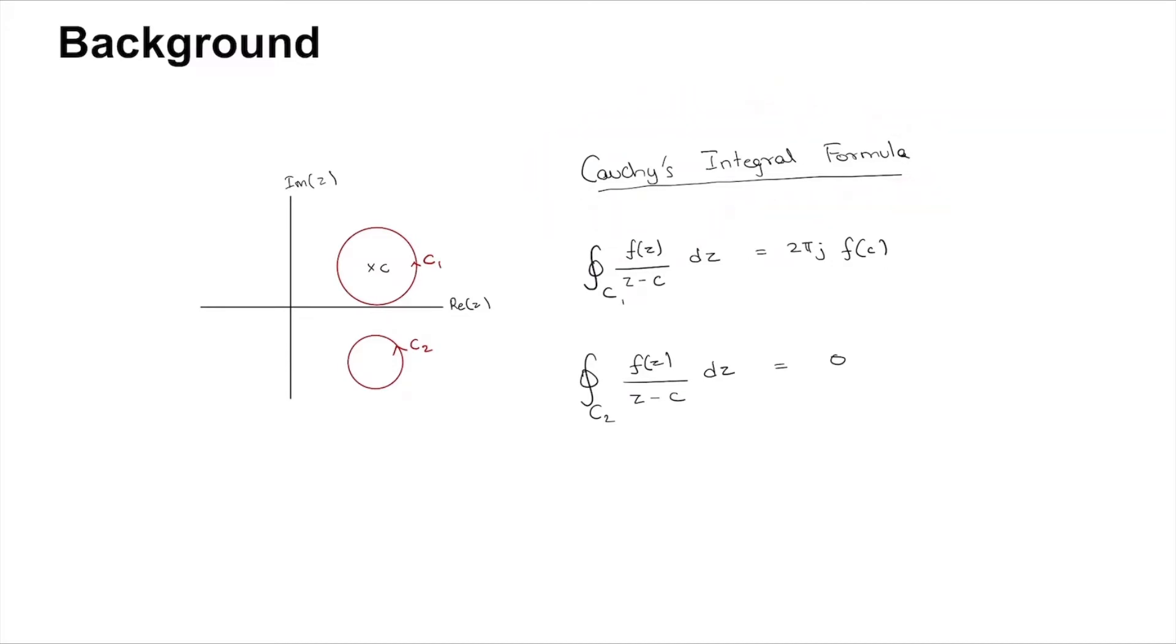If you have a function f(z) and you want to perform a contour integral over closed curve C of f(z)/(z - c), where the pole is included in the contour, then it has the following formula.